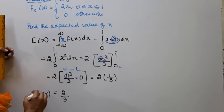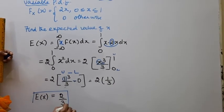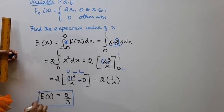2 by 3 is the answer. E(x), the expected value of x, is 2 by 3.